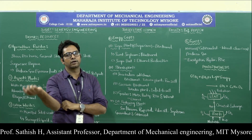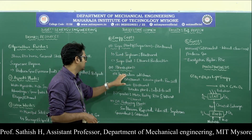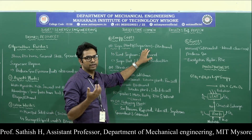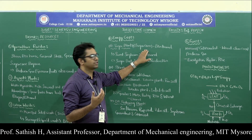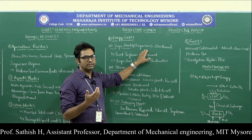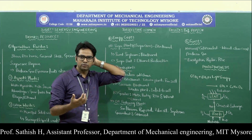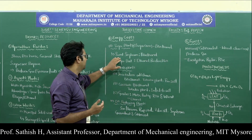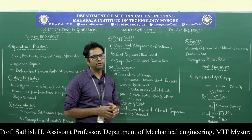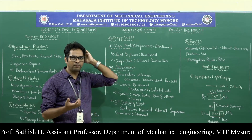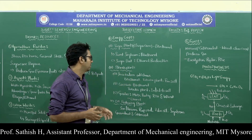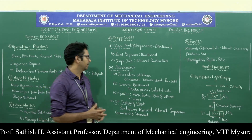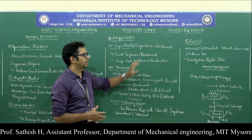Energy crops are crops grown specifically for producing energy. They are of three types: sugar plants, starch plants, and oil-producing plants. For sugar plants, which contain sugar as a major component, examples include sugarcane — an important energy crop from which bagasse is processed through fermentation to produce liquid bioethanol — as well as sweet sorghum and sugar beet, which are also used to produce bioethanol.